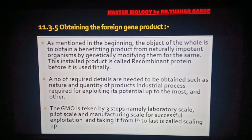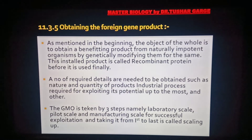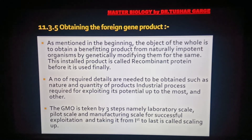तो जब हमें पता चल जाएगा कि किस condition में यह सबसे अच्छा potential of industrial formation show करेगा और किस तरीके से हमें उसमें grow करना है, तो फिर हम इस organism को 3 steps में industry level तक ले जाएंगे। इस process को हम scaling up कहेंगे। इसमें पहली stage होगी laboratory scale, जिसमें हम किसी एक organism के manufacturing potential को identify करेंगे।